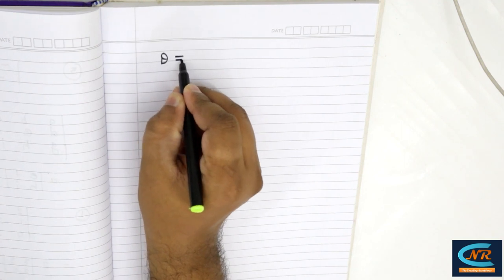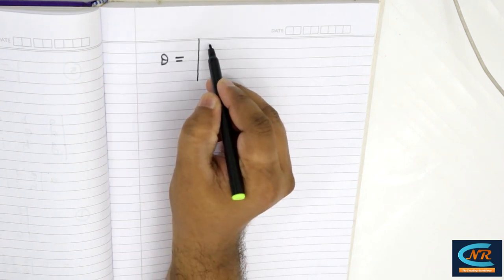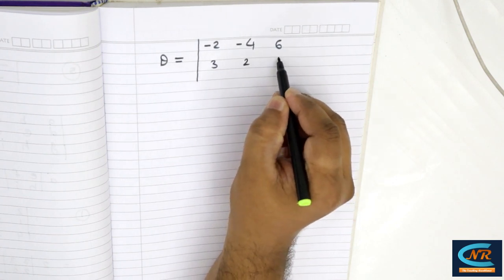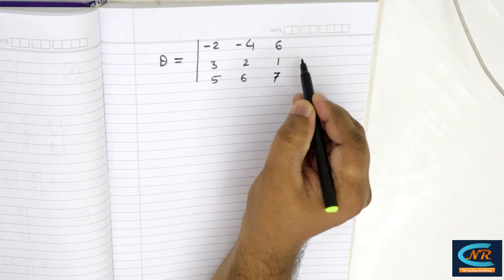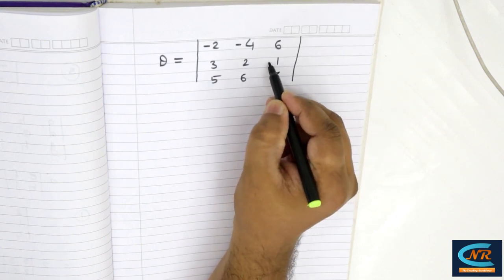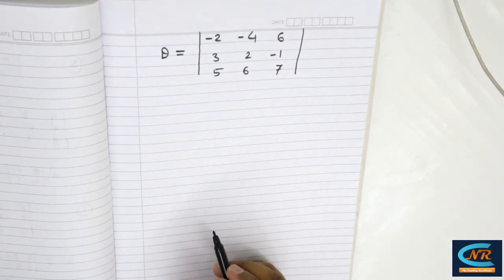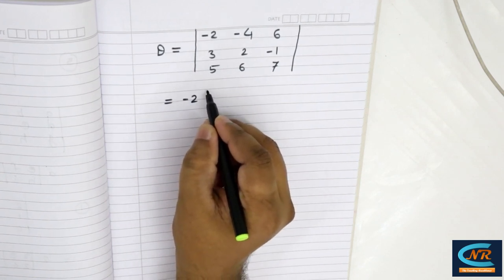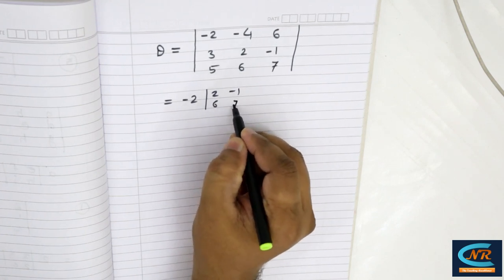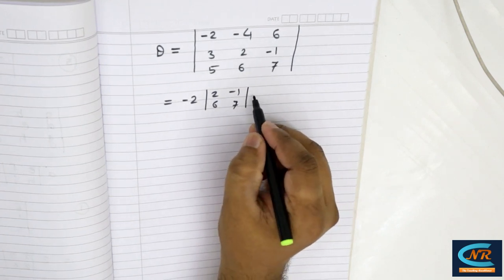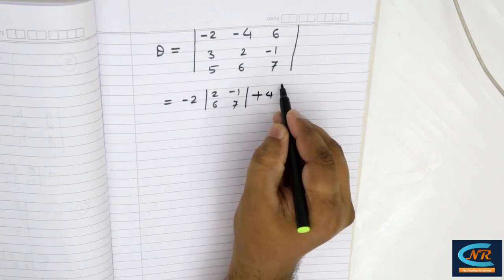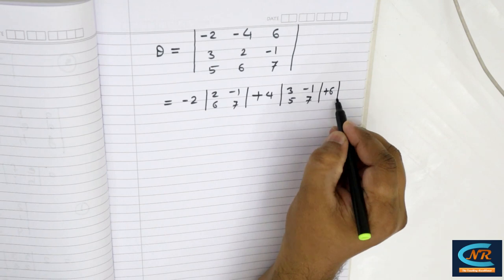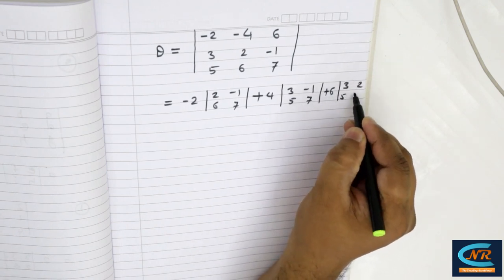Let's consider another determinant D equal to [-2, -4, 6, 3, 2, 1, 5, 6, 7]. First write down minus 2 with remaining elements [2, 1, 6, 7]. Then minus 4 becomes plus 4 with remaining [3, 1, 5, 7]. Plus 6 with remaining [3, 2, 5, 6].